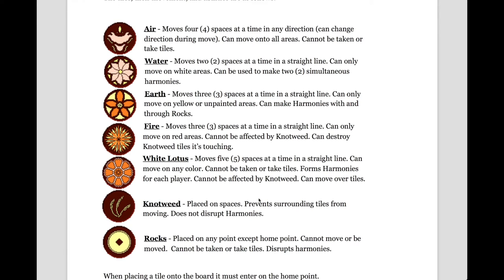The knotweed is placed on spaces opposed to the points of the board, and it prevents surrounding tiles from moving. It does not disrupt harmonies, due to the fact that it is not placed on intersections.